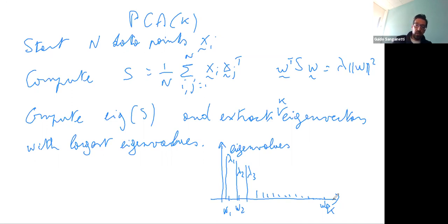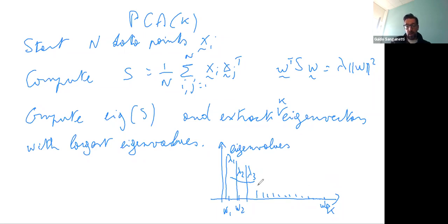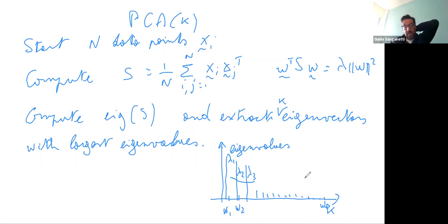In practice, you either project to two dimensions for visualization, or you compute all eigenvalues and eigenvectors — starting with just eigenvalues since that's cheaper — plot them, and hope to see a drop at some stage. The reality is that many times the drop is not as pronounced, but if there is real structure in the data that is well approximated by a linear subspace capturing most of the variance, you should see the drop, and that is where you stop.